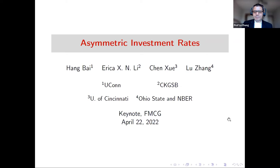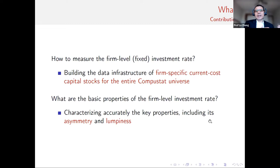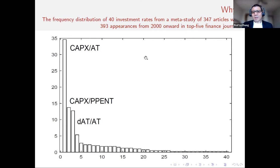What we ask in this paper is how to measure firm-level fixed investment rate. To this end, we're going to build the data infrastructure for firm-specific current cost capital stocks for the entire CompuStat universe. After that, we're going to ask what are the basic properties of firm-level investment rate, and characterize accurately the key properties, including the asymmetry and lumpiness of firm-level investment rate.